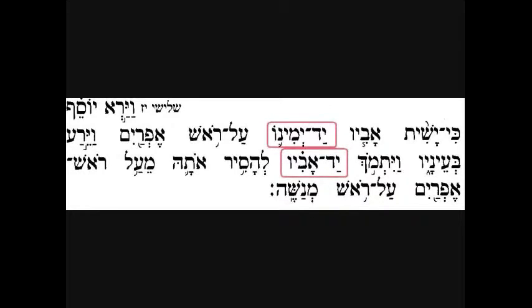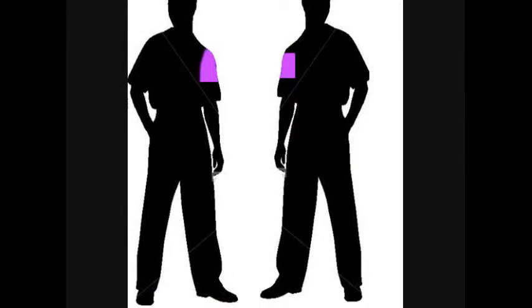The Gemara says in Menachos, what does 'yodecho' mean? It means the small hand — the left hand. Tefillin you put on the left hand. You might say, could it mean the right hand instead?